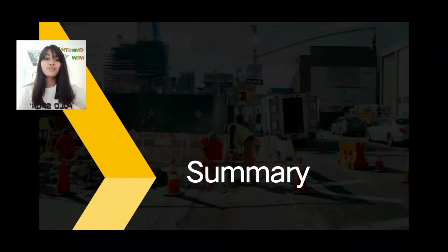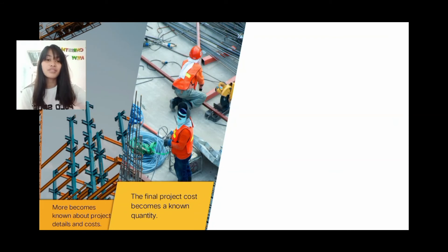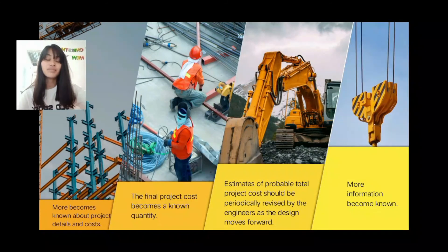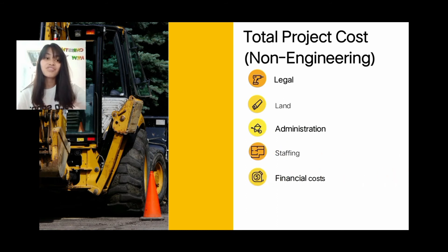As the project moves forward through phases, more becomes known about project details and costs. Until the completion of the project, the final project cost becomes a known quantity. Estimates of probable total project cost should be periodically revised by the engineers as the design moves forward and more information becomes known. So to summarize our topic, which is total project cost non-engineering, the costs that lie outside the knowledge and control of civil engineers are legal, land, administration, staffing, financial costs, and contingency allowance.